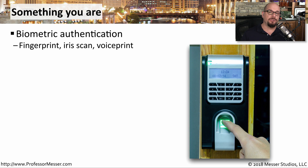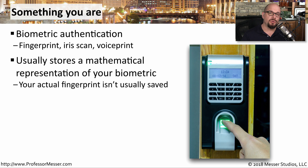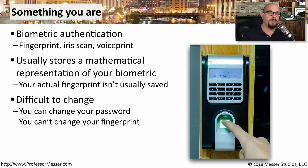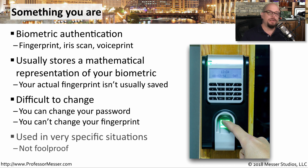If we extend these authentication factors to a person themselves, we're using something you are. This could be a fingerprint, an iris scan, or a voice print. These systems don't usually store a picture of your fingerprint or iris, but instead create a mathematical representation of what you are and store that for later reference. These factors are very difficult to change — a password can be changed often, but a fingerprint rarely changes. When working properly, biometrics provide very high security since no one else has your iris or fingerprint, but biometric readers are not always foolproof and should not be the only factor used for authentication.